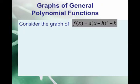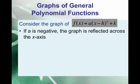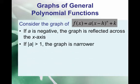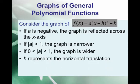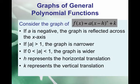Let's consider the graph of a(x - h)^n + k. This looks like the vertex form from quadratic functions, but the exponent is a general n and not necessarily 2. We're going to see a lot of similarities: if a is negative, the graph is reflected across the x-axis; if the magnitude of a is greater than 1, the graph is narrower; if the magnitude of a is between 0 and 1, the graph is wider. h represents the horizontal translation, and k represents the vertical translation.